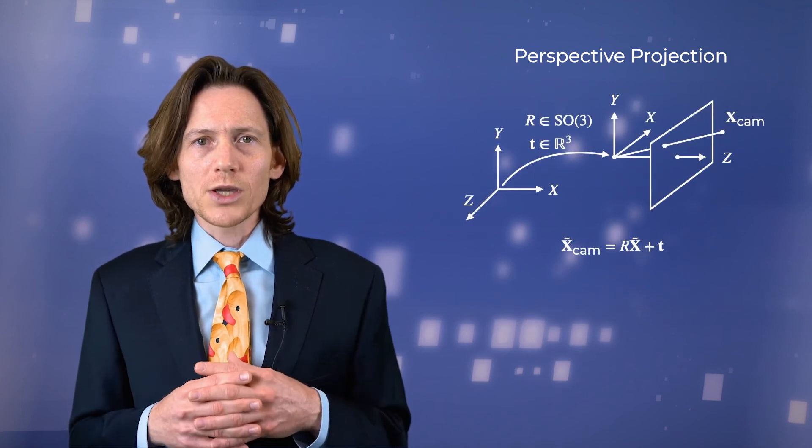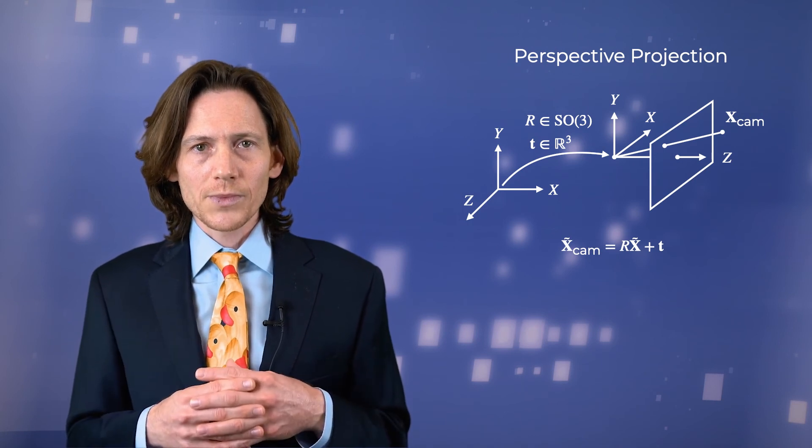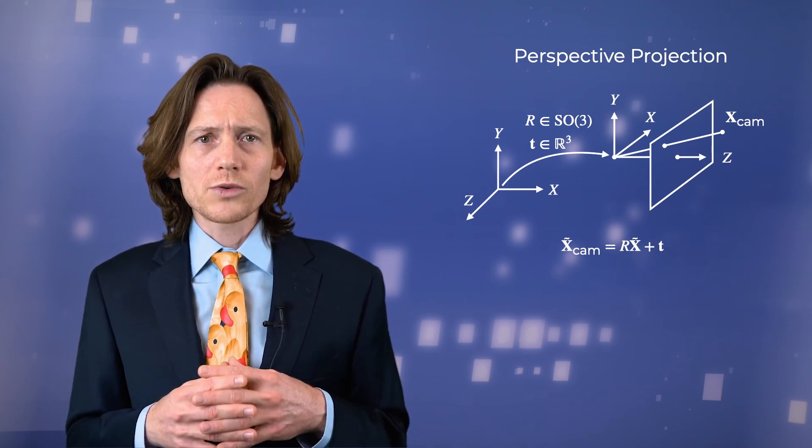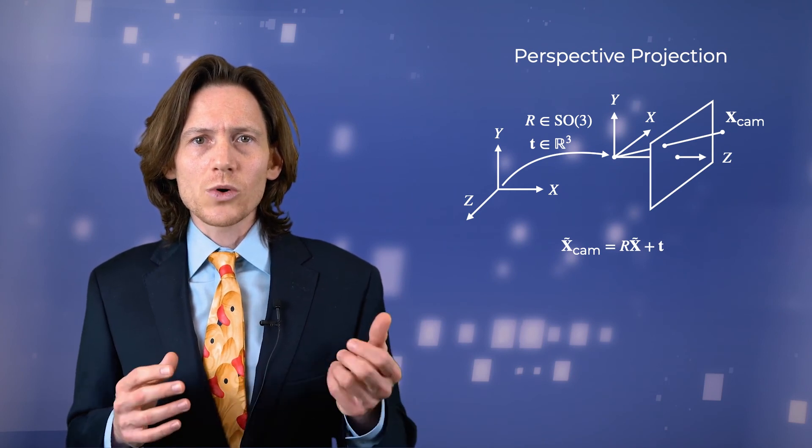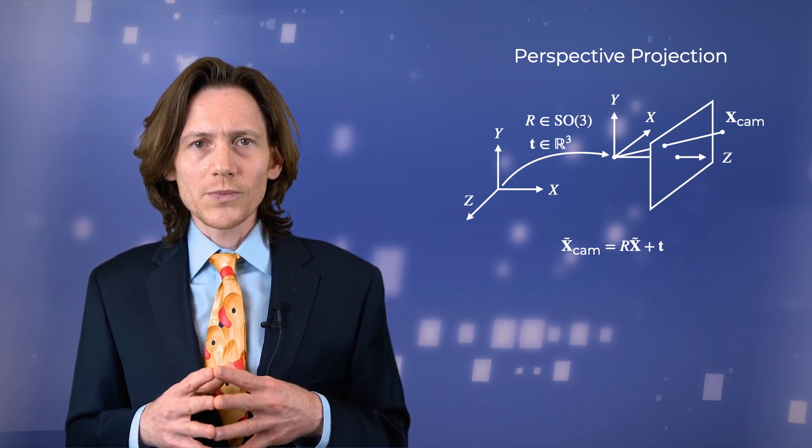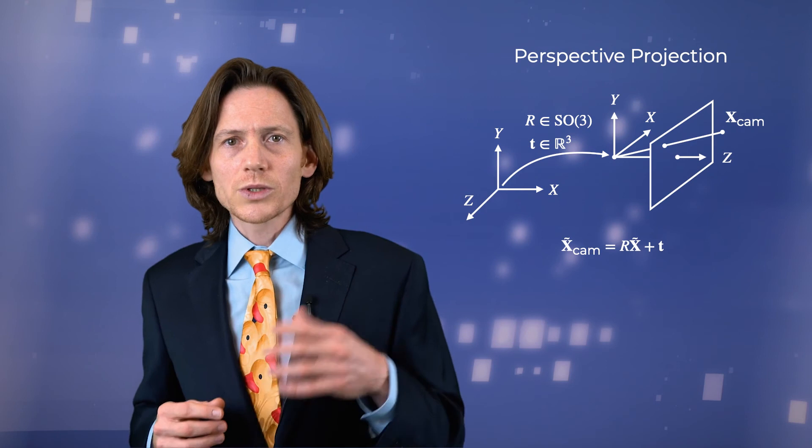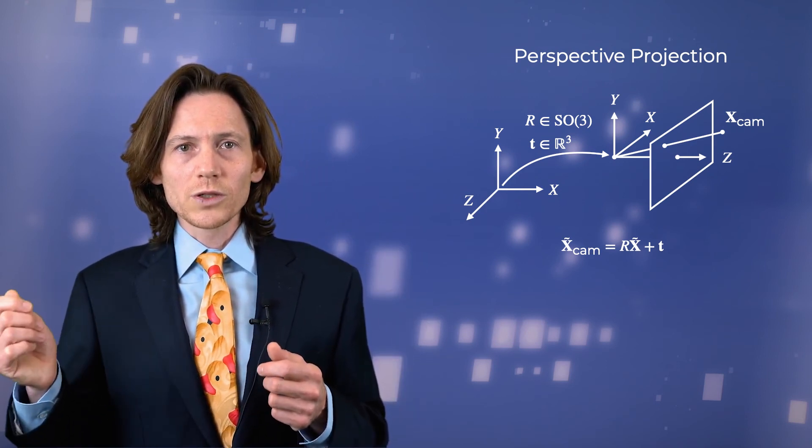We now have an expression that describes the transformation of 3D points in the camera frame to their 2D projection on the image. Suppose now that the coordinates of the 3D points are specified with respect to a world coordinate frame, and the camera's coordinate frame is defined relative to the world frame by a rotation matrix R and translation vector t.